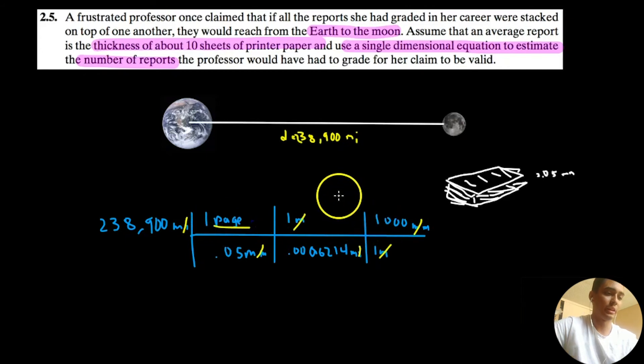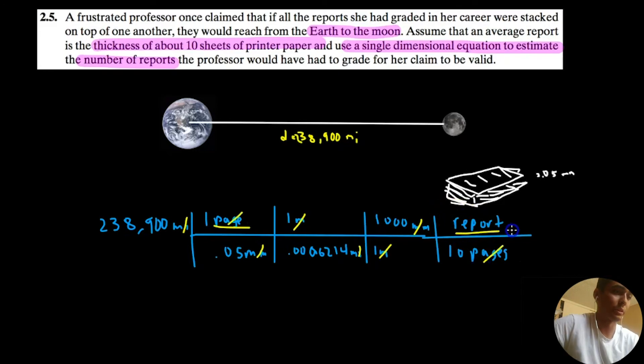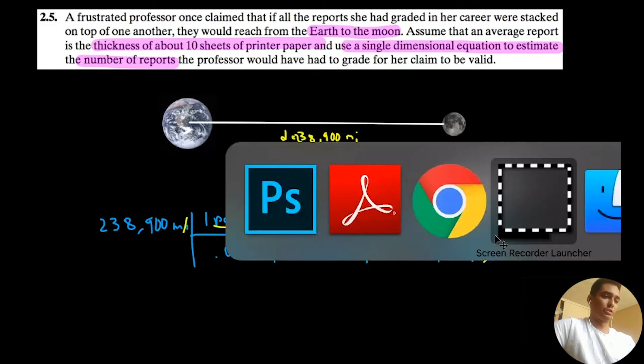And finally, 10 pages. There is an average of about 10 pages per report. Cancel all pages and we got reports. So if we do this calculation...